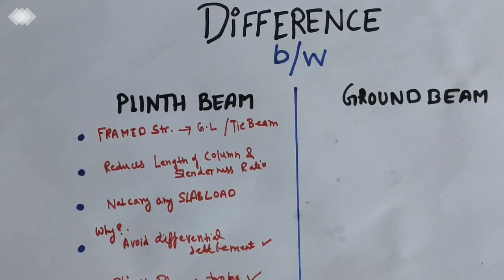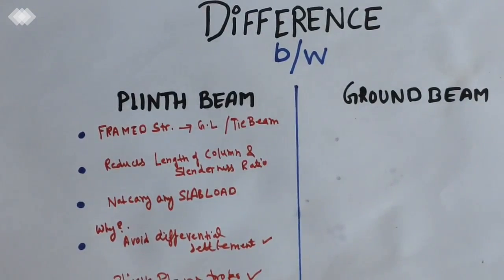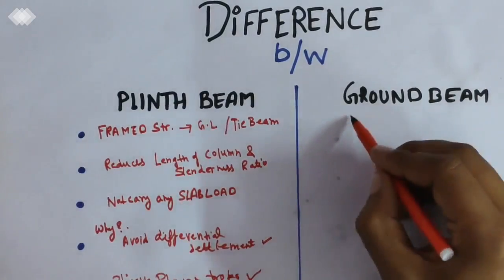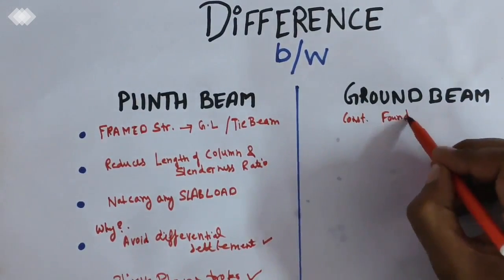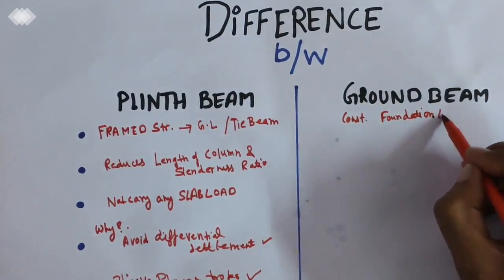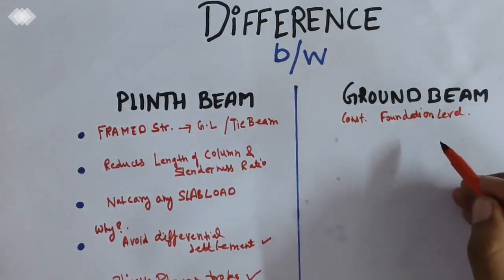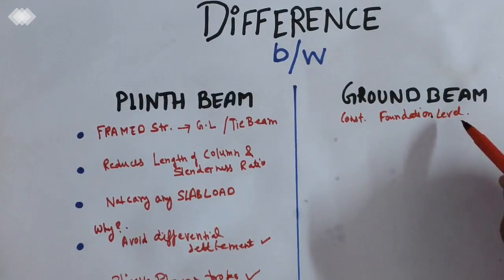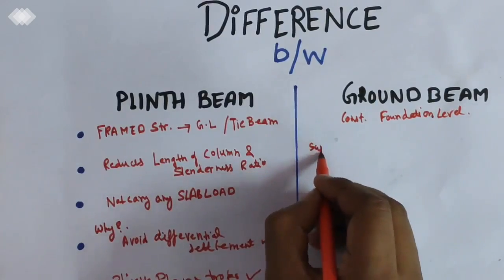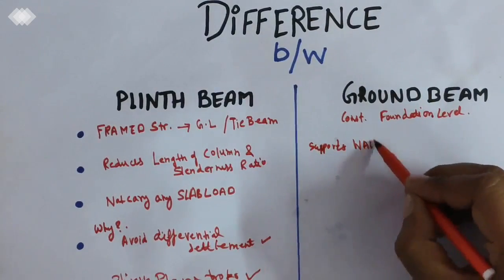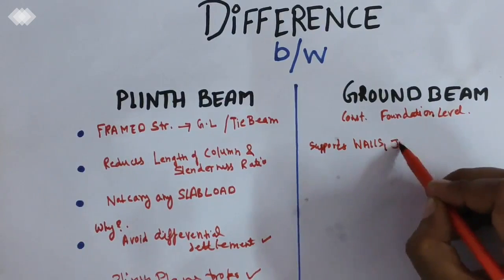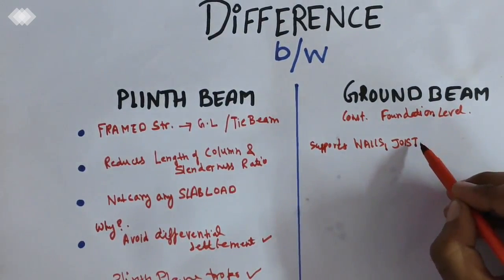Plinth beams are provided for these reasons. Now we will move on to the ground beam. Further in this session I will show you pictures to illustrate the difference between the plinth beam and the ground beam. The ground beam is constructed at foundation level, at the very beginning of construction.